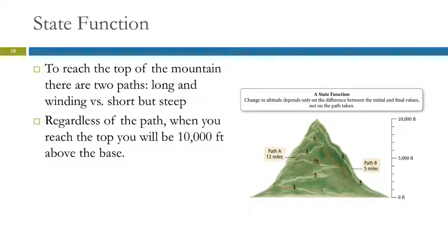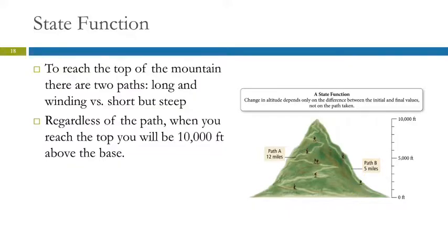Let's investigate this state function idea. Here we've got a mountain, and we're trying to get to the top. The mountain is 10,000 feet. There are two different paths: path A, which is 12 miles long and snakes around, or path B, which goes basically straight up — only five miles but much harder going. Change in elevation is a state function. If you start at the bottom and get to the top of the mountain, your change in elevation is 10,000 feet regardless of which path you took. Change in elevation only depends on where you are at the end and where you started. That's a state function.